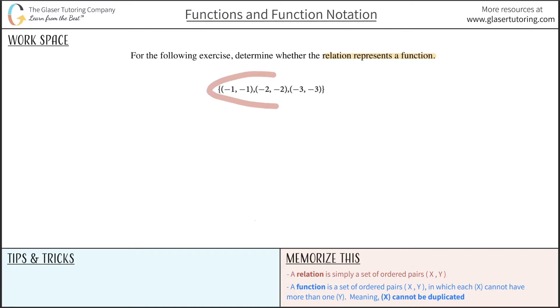If we look over here, we have three ordered pairs: one, two, three. These three comprise a set, and therefore we can say that this, at a minimum, is a relation.